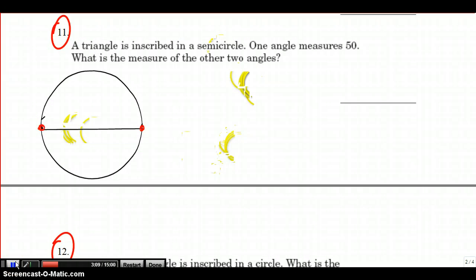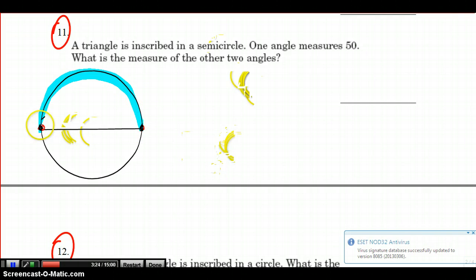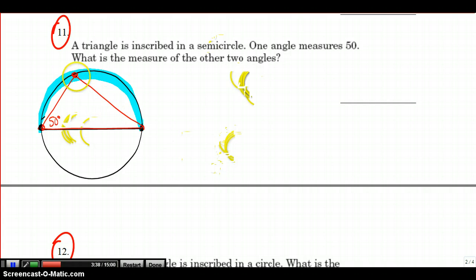Here's problem number 11. It says a triangle is inscribed in a semi-circle. Now the semi-circle is only this part. The semi-circle doesn't include the diameter. So if I have a triangle that's inscribed in this semi-circle, the third vertex would have to be somewhere on that turquoise part, maybe like right there. Then if I draw in those two other sides, here is my inscribed triangle. One of the angles is 50 degrees, and since this triangle is inscribed inside of a semi-circle, that means that this is half of 180 or 90 degrees. 50 and 40 are complementary, so the other two angles are 40 degrees and 90 degrees.